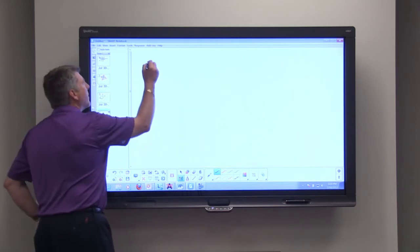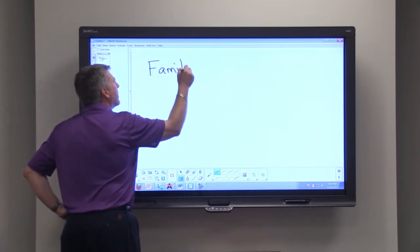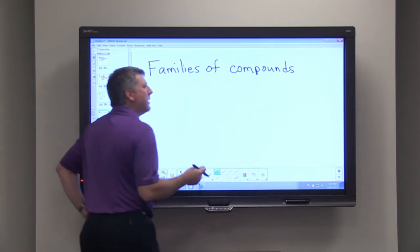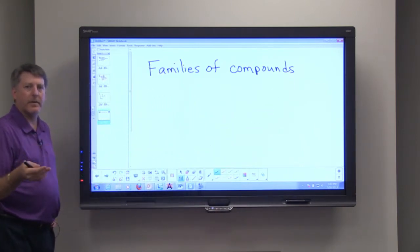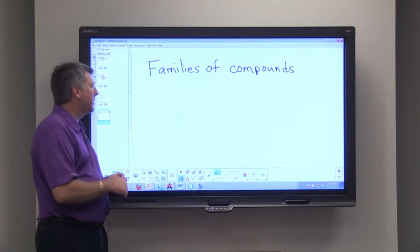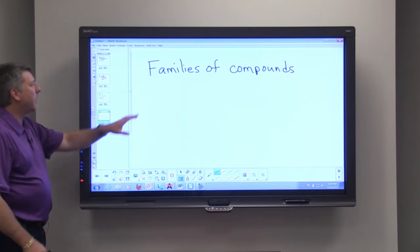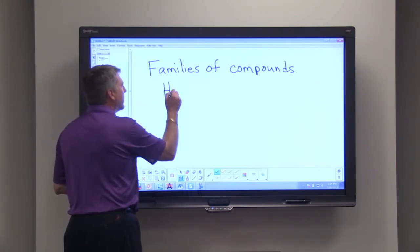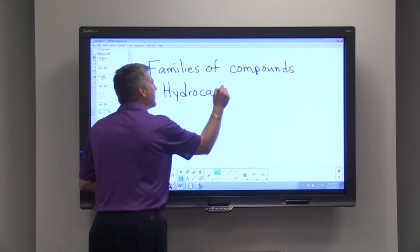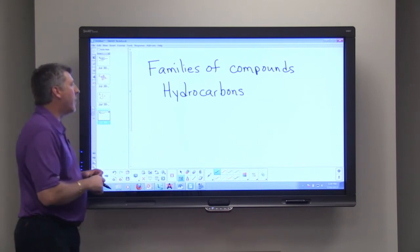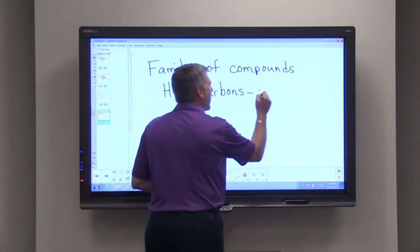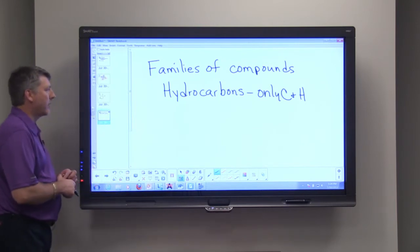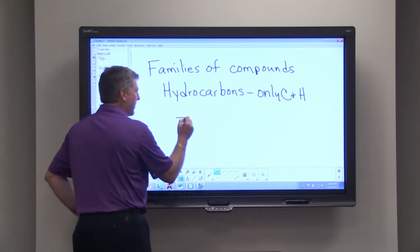When we're studying organic chemistry we study families of compounds. And I like the idea of families because like members of your family may share certain characteristics in common. Families of organic compounds share certain characteristics in common, certain chemical characteristics. The simplest organic compounds are called the hydrocarbons, and they're hydrocarbons because they contain only carbon and hydrogen.